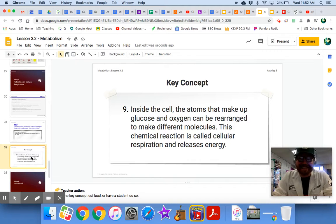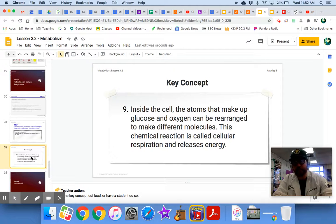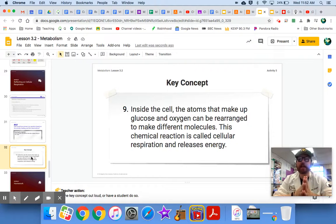And that brings us to our key concept. Number nine inside the cells, the atoms that make up glucose and oxygen can be rearranged to make different molecules. This chemical reaction is called cellular respiration and it releases energy. The rearranging of the oxygen and the glucose molecules to make carbon dioxide and water releases energy. That is what our cells are doing. That is what is happening. And that is how we are getting energy. So if you don't have the glucose, you're not going to be able to make that happen. If you don't have the oxygen, you're not going to be able to make that happen. We're not going to be able to release that energy.